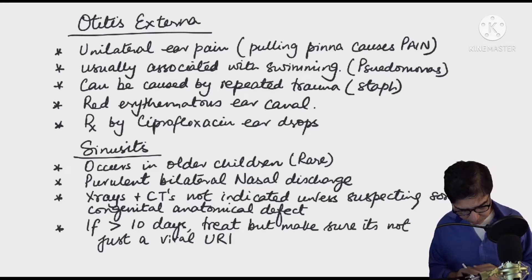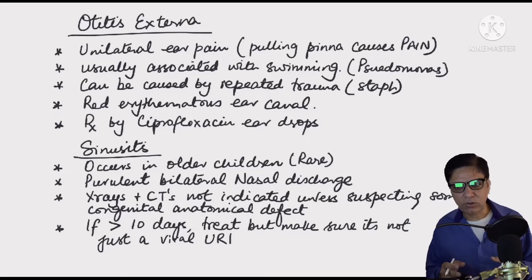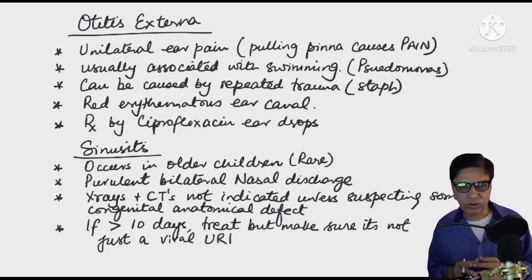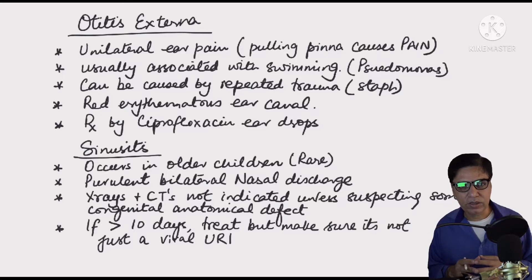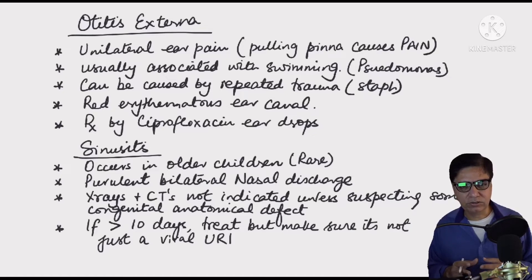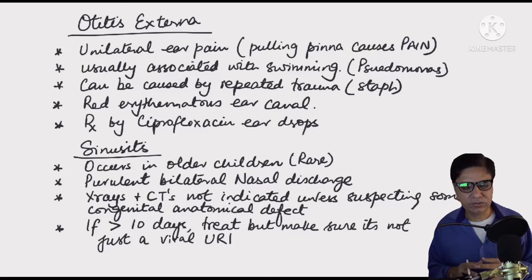Moving on to sinusitis. Sinusitis occurs in older children and is quite rare in young kids. Children are born with maxillary sinuses, but these sinuses take time to develop — frontal sinuses usually don't develop before age nine or ten. Sinusitis is very rare in kids less than nine or ten years of age unless they have anatomical defects in their sinuses.